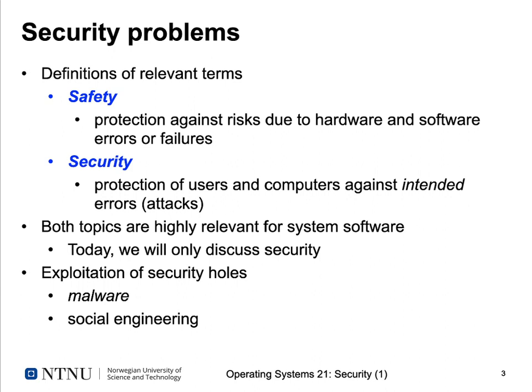When we talk about security, we should first define what it actually is, because it often gets mixed up with similar terms. Safety in computer systems is protection against risks due to hardware and software errors or failures — for example, recovering information after a crash or a bit flip in RAM using redundant storage. Security, on the other hand, is protection against intended errors caused by an actor outside your system — an attack. Both topics are highly relevant for system software, but today we focus on security.